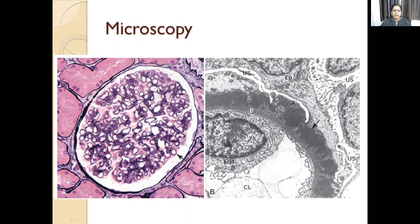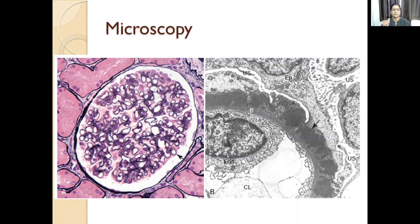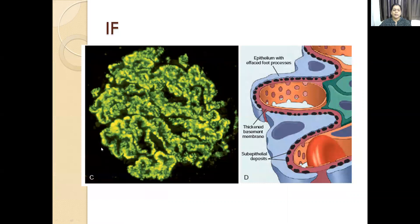Here you can see a silver methenamine stain showing a thick basement membrane. You can see spikes which are present. In the morphology, I discuss membranous nephropathy under three headings. In light microscopy, you find the thick basement membrane. In electron microscopy, you can see the subepithelial region — the podocytes and subepithelial deposits. In immunofluorescence, you can see C3 and IgG granular appearance in the form of granular deposition.